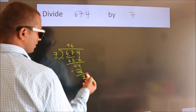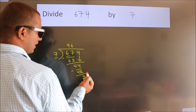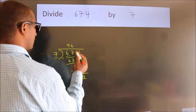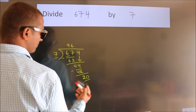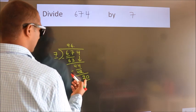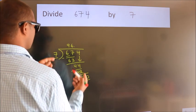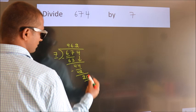After this, no more numbers to bring down. So what we do is we put a dot and take 0. So 20. A number close to 20 in the 7 table is 7 twos, 14.